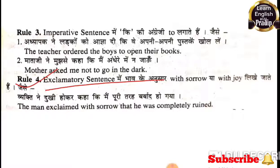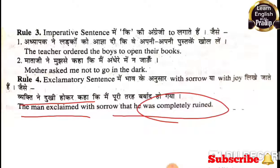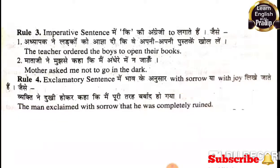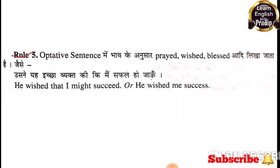चौथा रूल कहता है: exclamatory sentence में भाव के अनुसार 'with sorrow' या 'with joy' लिखे जाते हैं। जैसे: व्यक्ति ने दुखी होकर कहा कि मैं पूरी तरह बरबाद हो गया — The man exclaimed with sorrow that he was completely ruined.